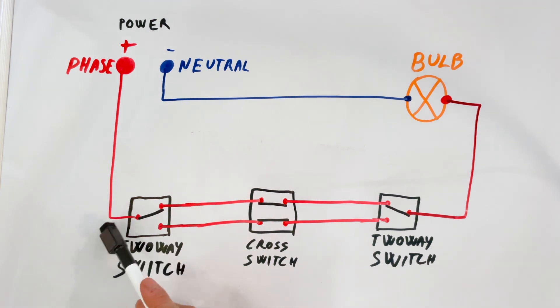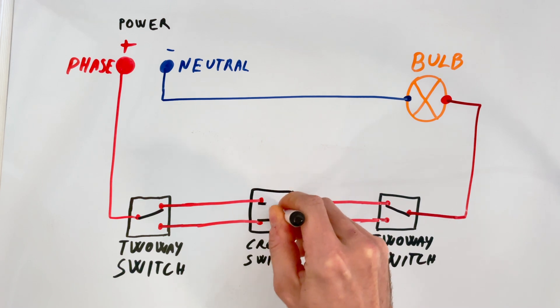Right now, the circuit is closed, so the light is on. If you toggle the cross switch, it changes the connection, opening the circuit and turning the light off.